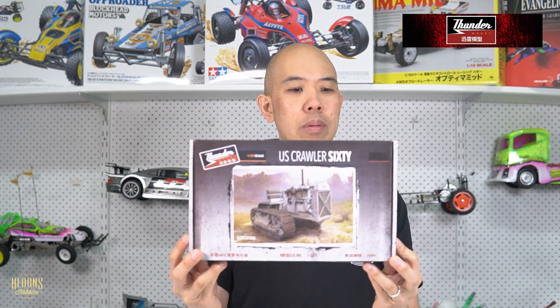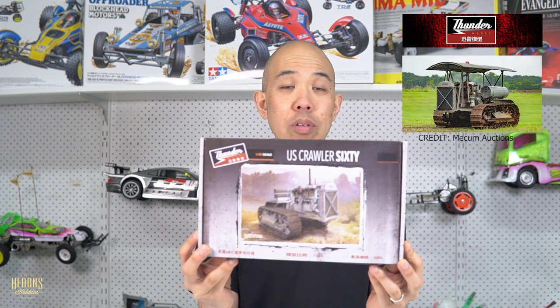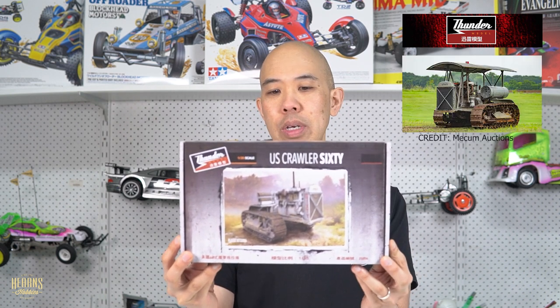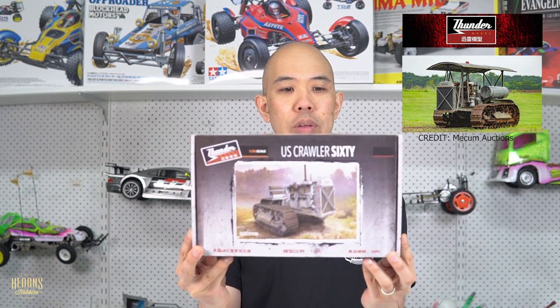Hello, this is BJ from Hearn's Hobbies and I'll be looking closely at the Thunder Models Crawler 60, or the U.S. Crawler 60. This is actually a Caterpillar 60, 60 meaning 60 horsepower, and it's one of the fairly popular small tractors from the time.